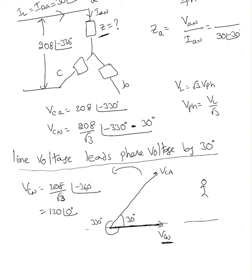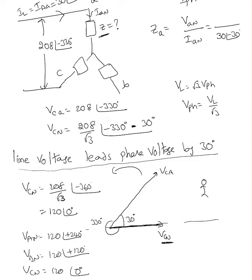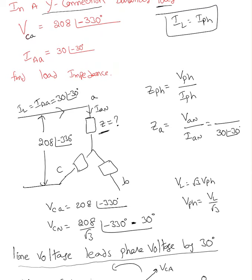I have VCN but I want VAN. VBN equals 120 at an angle of zero. To get VBN from VCN, add 120 degrees. To get VAN, add another 120 — so 240. Your VAN is going to be somewhere at 240 degrees. This is my VAN, which is basically minus 120 degrees. So VAN equals 120 at an angle of 240.